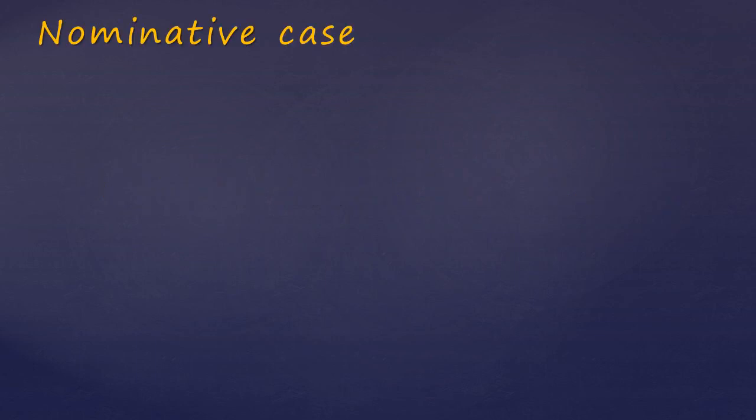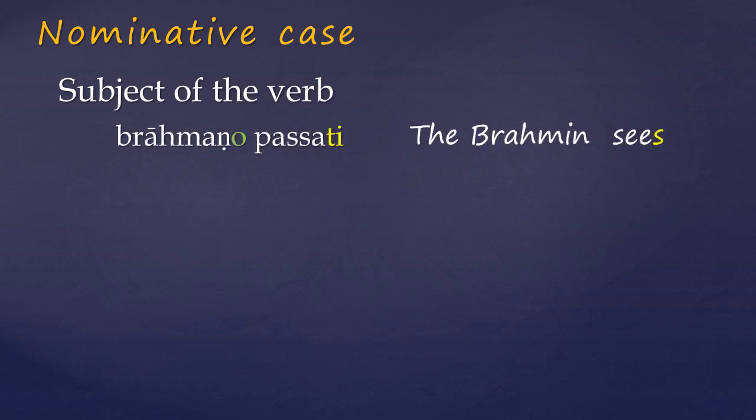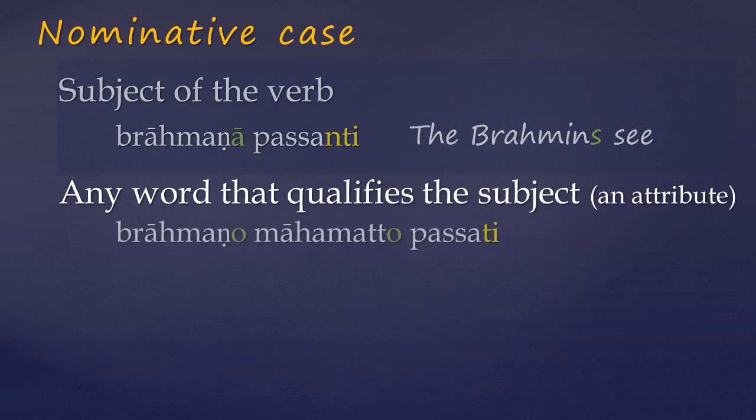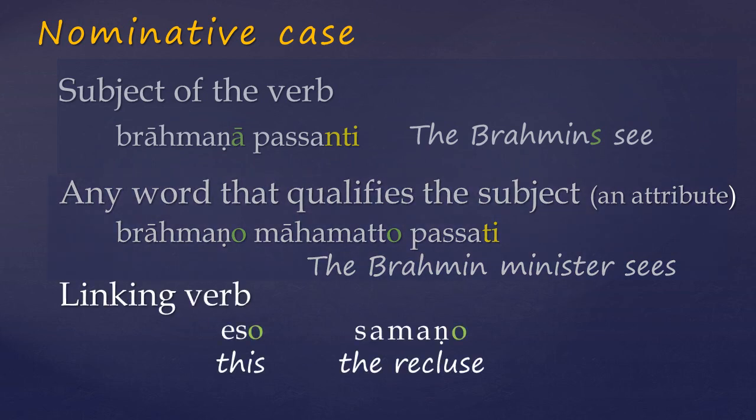As already highlighted, the main use of the nominative case is to indicate the subject of the verb. And the verb too will always change its inflection to agree with that subject in both person and number. And also any word which qualifies the subject, like an adjective or an appositional phrase, which means basically two words or phrases which describe the same object. Here the Brahmin, who is also a minister, sees. And this rule also applies to linking verbs, whether they're explicit or implied. As the attribute will always agree in both case and number. So we can see that in Pali, as far as possible, words referring to the same thing agree in case, number and gender. With the attribute following the word that it qualifies.